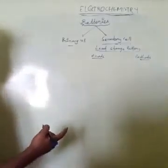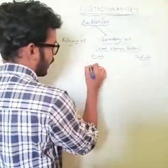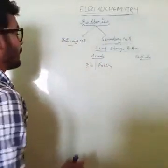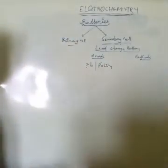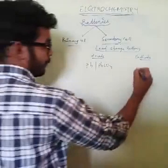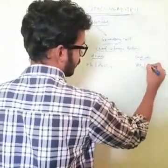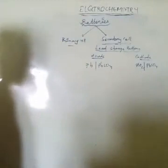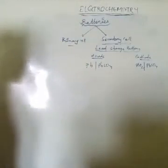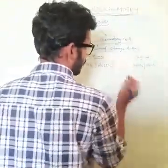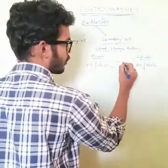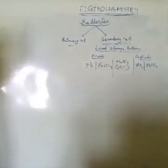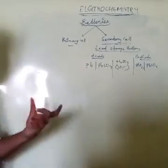In the lead storage battery, at the anode, Pb converts to PbSO₄, and at the cathode, PbO₂ also converts to PbSO₄. Between these, 30% concentrated H₂SO₄ is given for ionic mobility. At the anode, Pb → PbSO₄ by losing 2 electrons and combining with SO₄²⁻ from H₂SO₄.